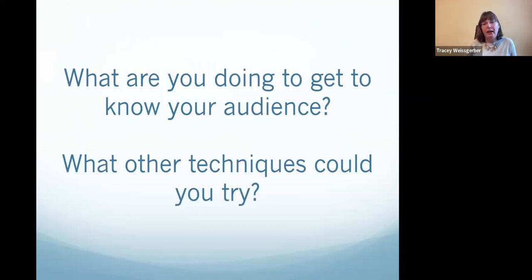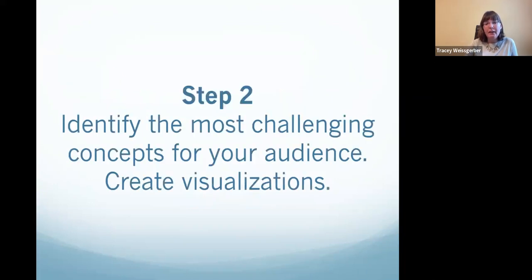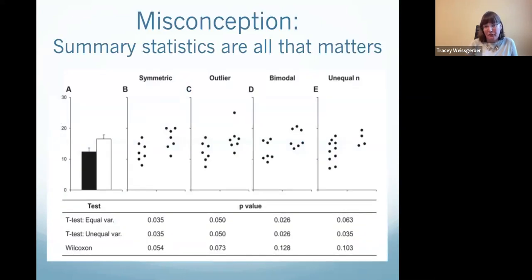Step two is to identify the most challenging concepts for your audience and create visualizations. Here's an example from that first paper we published — the goal was to address the misconception that summary statistics are all that matters. The visualization was developed to illustrate what information we're missing when we only see summary statistics and don't see the underlying data.